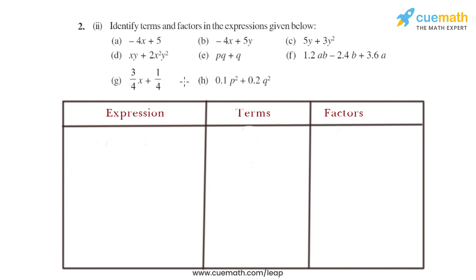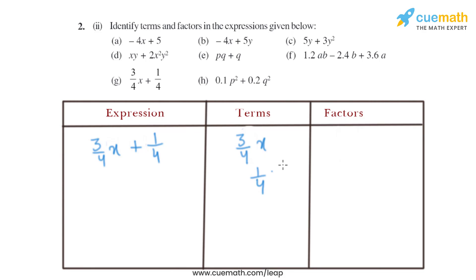Now let's move on to part G. The expression given is 3/4 X plus 1/4. The terms are 3/4 X and 1/4. The factor of 3/4 X will be 3/4 and X. Similarly, the factor of 1/4 will be 1/4 only.